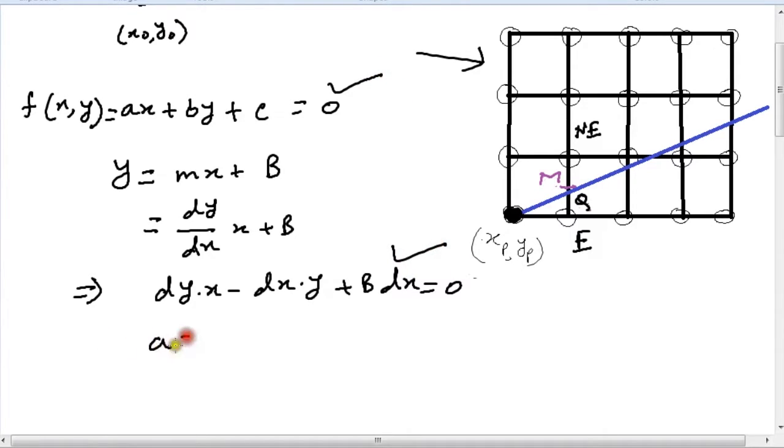Comparing this equation with this one, we have a equals dy, b equals minus dx, and c equals b dx.